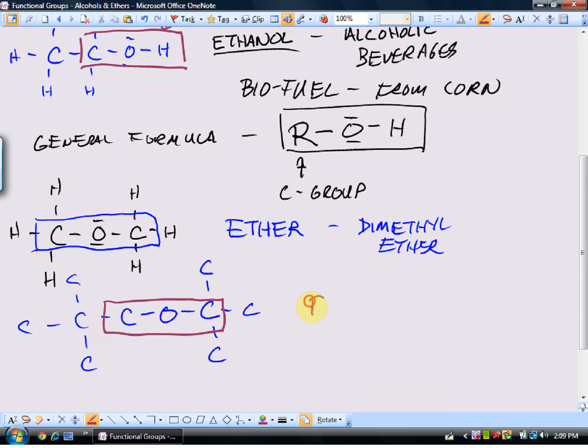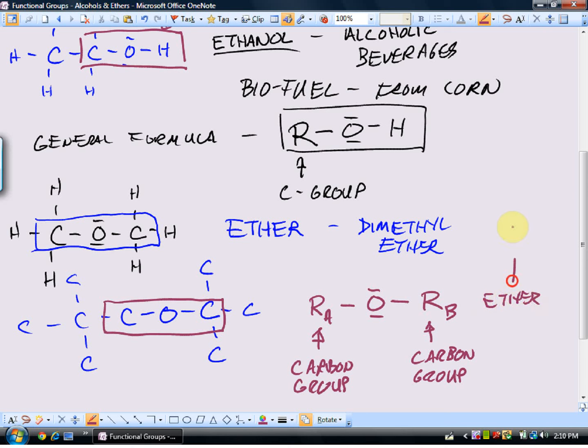The general formula for an ether is given by this, where R is some carbon group. But now the possibility is that we can have a carbon group on one side of the oxygen—I've designated that as R sub A—and we can have another carbon group on the other side that doesn't have to be the same, R sub B. Notice the difference between the general formula of an ether and the general formula of an alcohol.